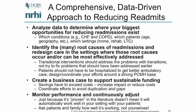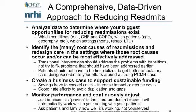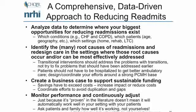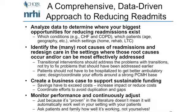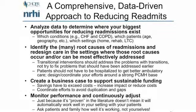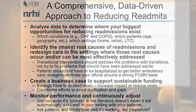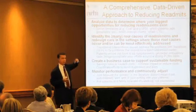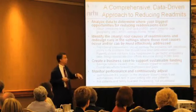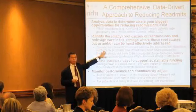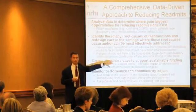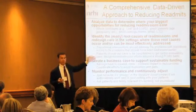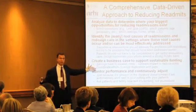In summary, what you should be thinking about is a comprehensive and data-driven approach to reducing readmissions in Oregon. That starts with analyzing the data to figure out where your biggest problems are — which conditions, which patients, which areas, which facilities. Second, look at the root causes of those readmissions, as there may be many, and redesign care in the settings where those root causes are occurring. Transitional interventions are desirable to fix genuinely transitional problems, but shouldn't be used to paper over more fundamental problems.